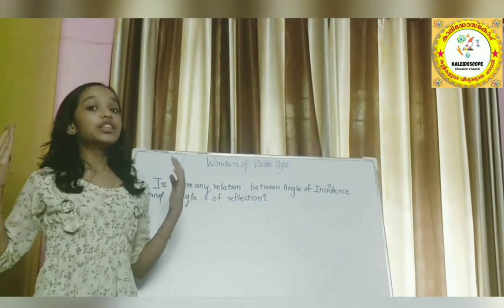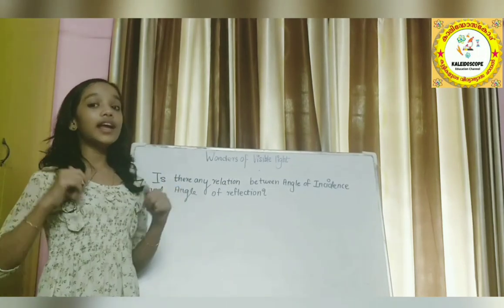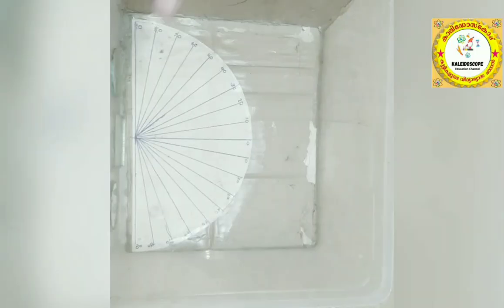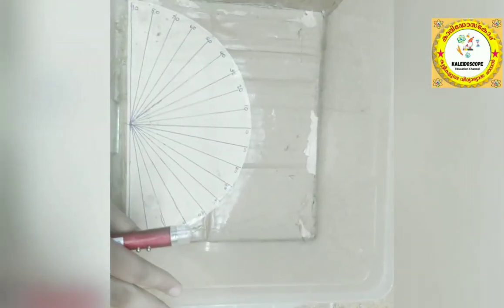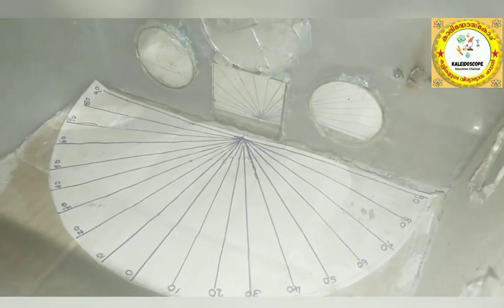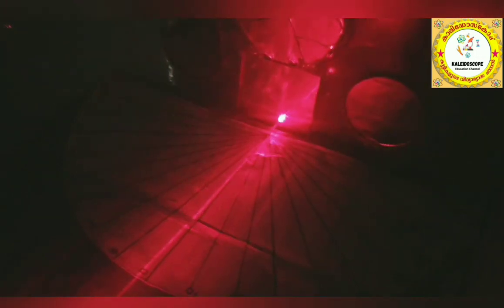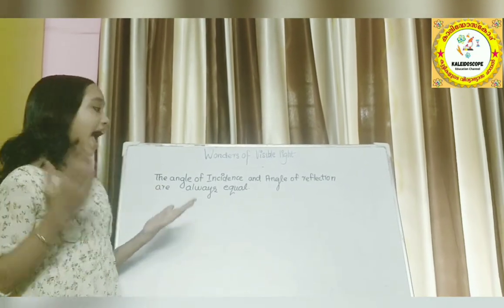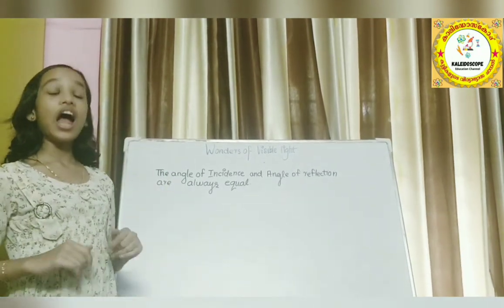Ready for the next experiment? Through this experiment, we are going to find if there is any relation between the angle of incidence and the angle of reflection. We are using the same materials: a smoke box with a paper protractor and a laser torch. We shine the laser torch at 20 degrees — it reflects at 20 degrees. We try at 30 degrees and 40 degrees. From the experiment, we found that the angle of incidence and the angle of reflection are always equal.